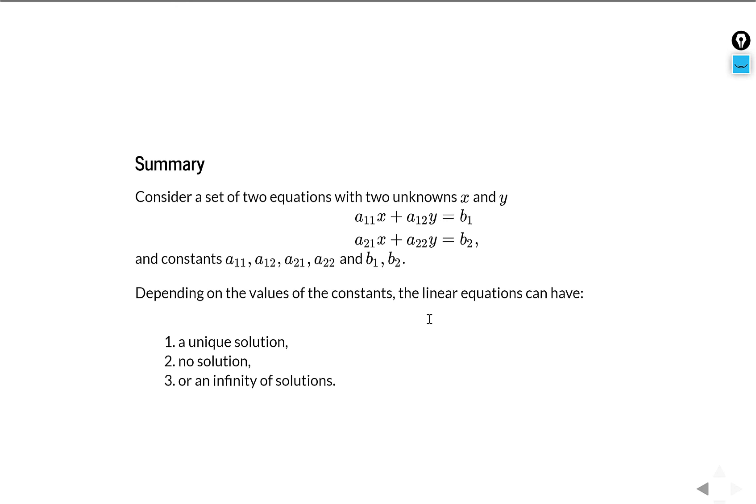So to summarize, a set of two equations with two unknowns, x and y, with constants—these are the coefficients of x and y—on the right hand side, these are also constants. Can have a unique solution, can have no solution, or an infinity of solutions.